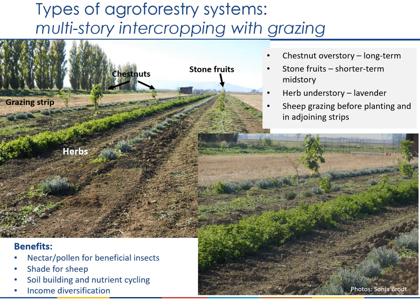More mechanized systems can also be more complex to an extent. Here is an example of a recently planted system in California, planted in rows accessible by tractor. It will eventually consist of an overstory of chestnut trees, with smaller stone fruit trees in outer rows for a shorter-term midstory that will eventually be removed once the chestnuts mature, while herbs such as lavender occupy a few rows in the understory. In addition, sheep will graze in adjoining strips of pasture located between these strips of multi-story crops. Benefits include herbs providing pollinator and beneficial insect support, trees providing shade for sheep, and the sheep providing nutrient, soil health benefits, and income diversification.